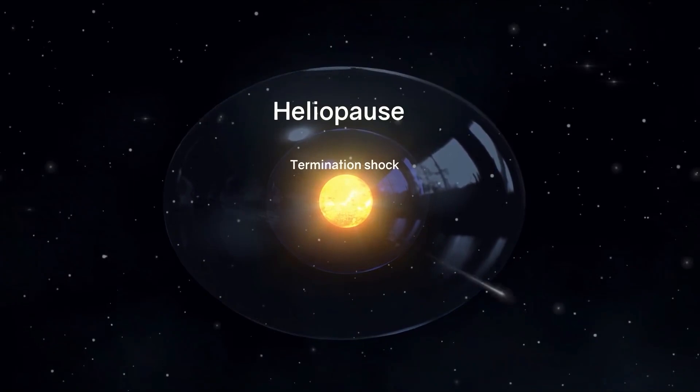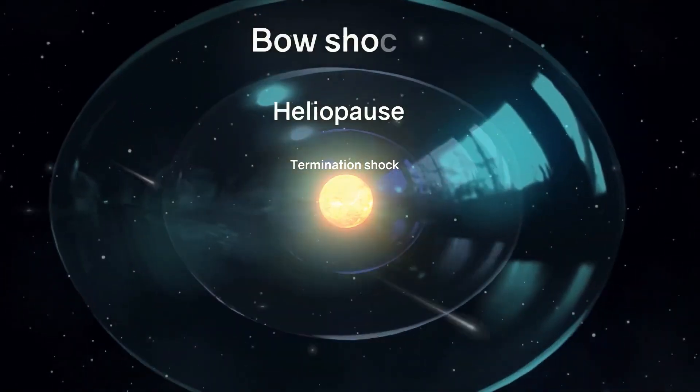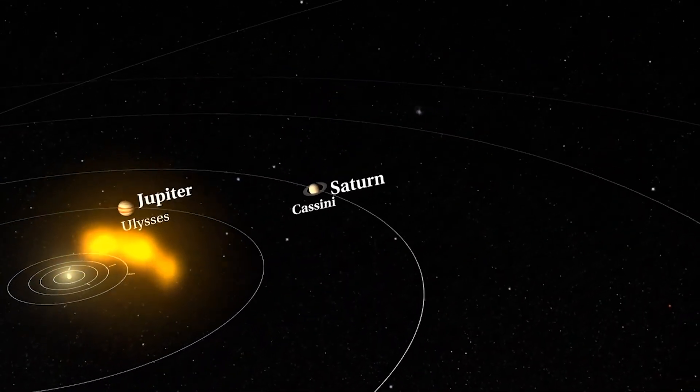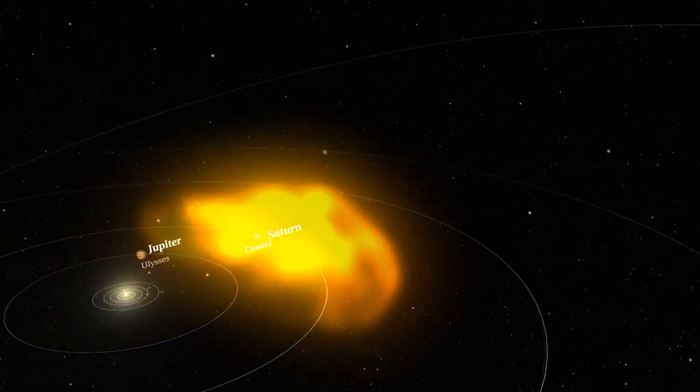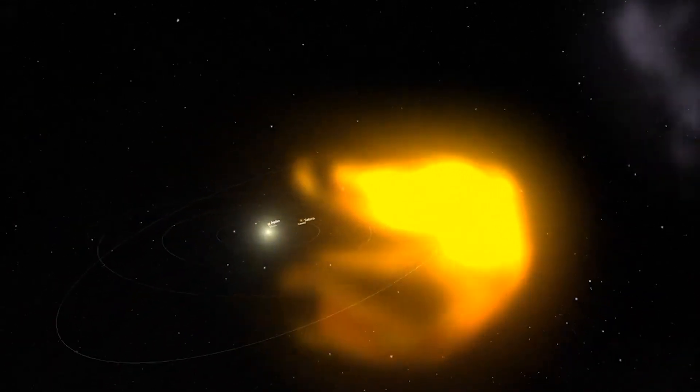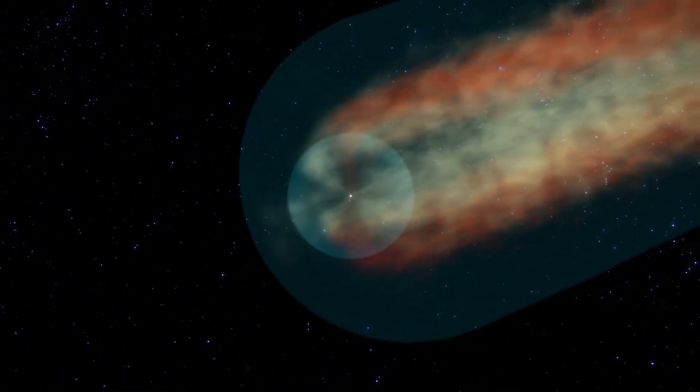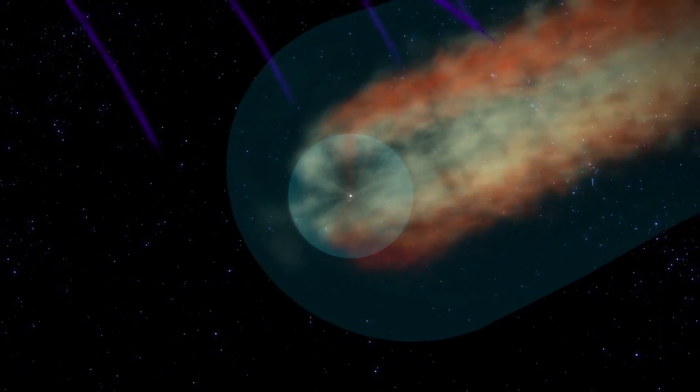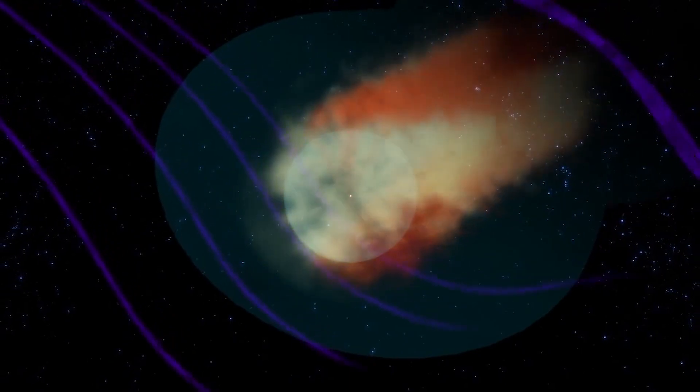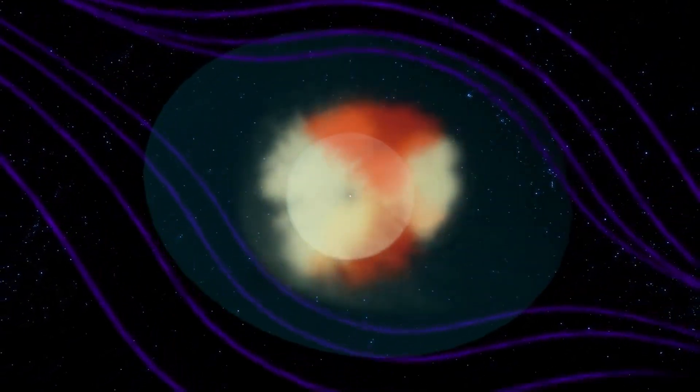For a long time, scientists have speculated about the existence of a bow shock, just beyond the heliopause, where solar wind particles and the heliosphere's magnetic field disrupt the interstellar medium. The theory of a softer bow wave has gained acceptance due to the contention that the solar system is not moving swiftly enough to cause a shock.